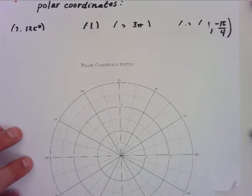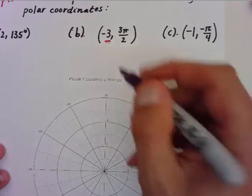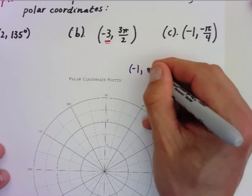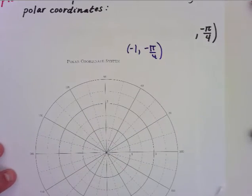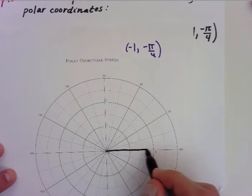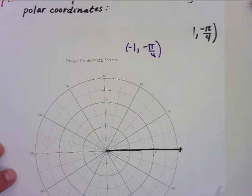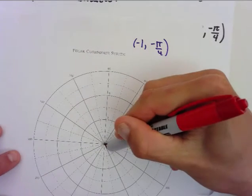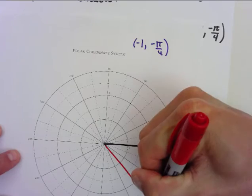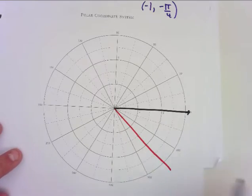Last one here, which would be -1, -π/4. So, now I have two negative angles. So, I'll go ahead and draw just my initial side there. Now, my terminal side is -π/4, which is halfway between, which is this line right here, halfway between.